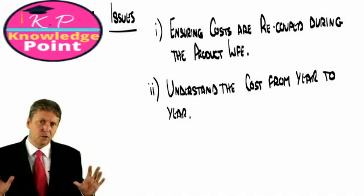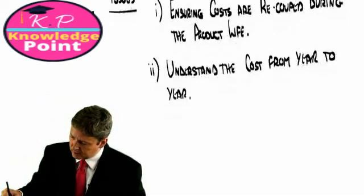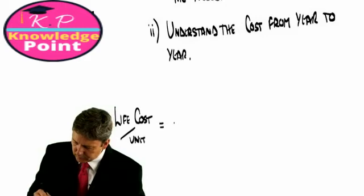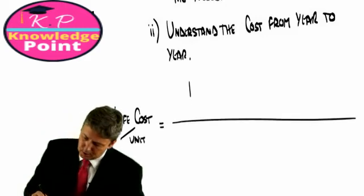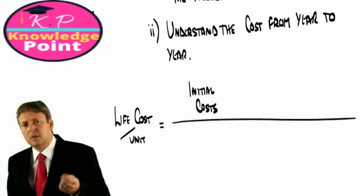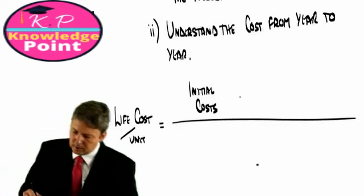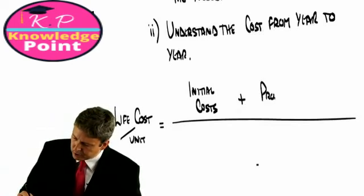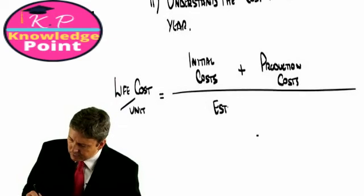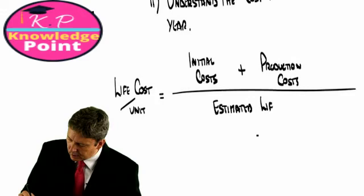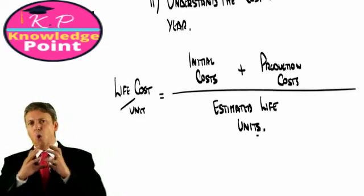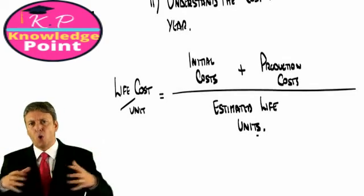Now after all of this nonsense, there is only one thing we really have to reflect. We need the life cost per unit. And to get the life cost per unit, we will take the initial costs, whatever they may be - research and development, developing the factory, anything of that nature - to which we take all the production costs, you know, materials, labor, and things like that. And we divide through by the estimated life units.